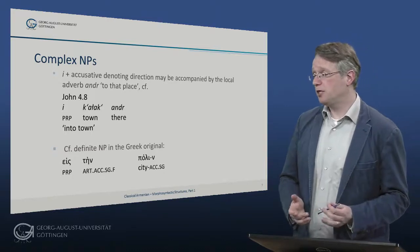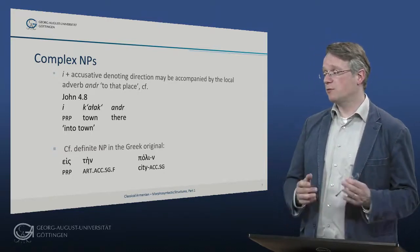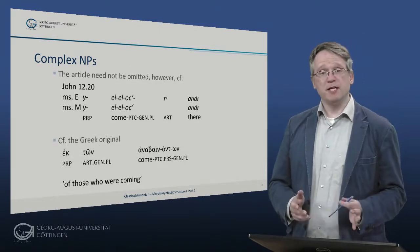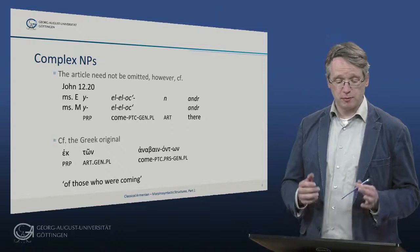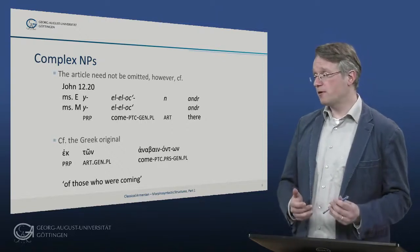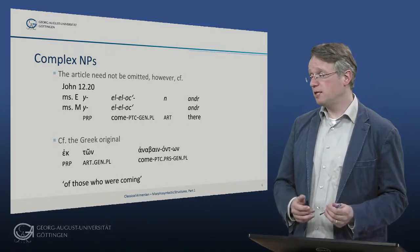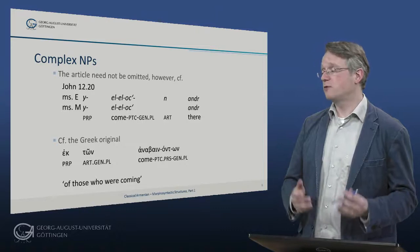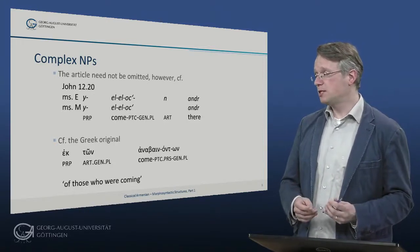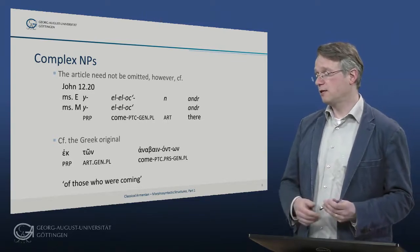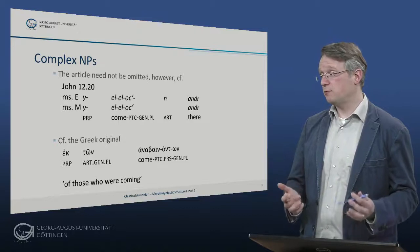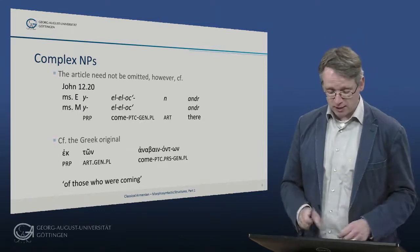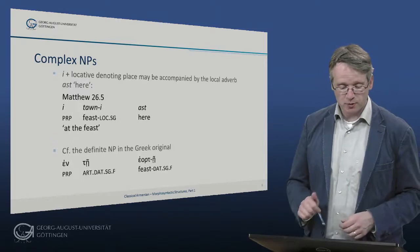In Greek, if we compare the definite NP, of course, we only have eis ten polin — so the preposition, definite article, and then the noun polis itself in the accusative. However, things are not that easy. The article need not be omitted. So for example in John 12:20, both manuscripts differ once more. We have in one manuscript e jirlelotsen under — that is, of those who were coming — and in manuscript m we have no article but the postposition, and in manuscript m we have actually both. So the Greek original is simply ek ton anabainonton, 'of those who were coming'. So it is not necessarily always omitted, which deserves further study.